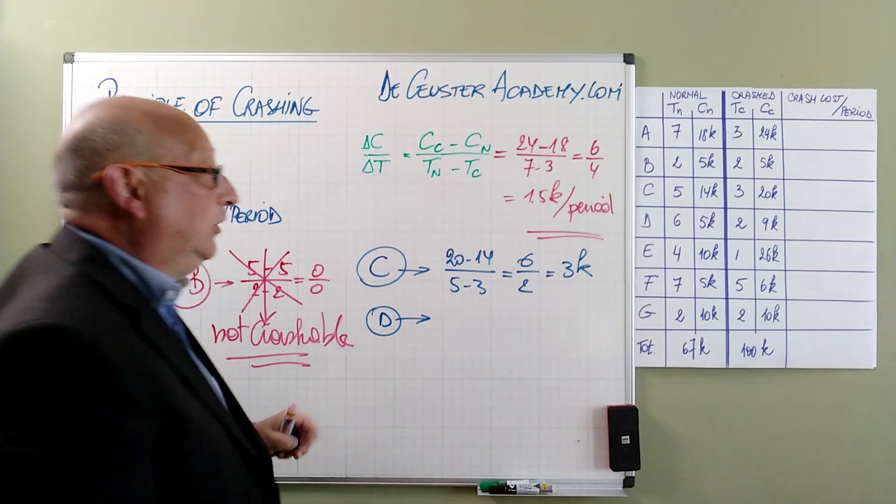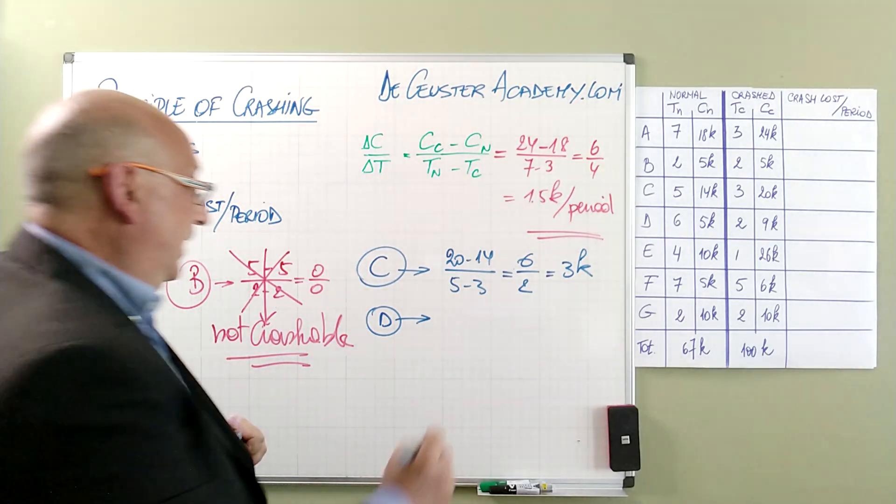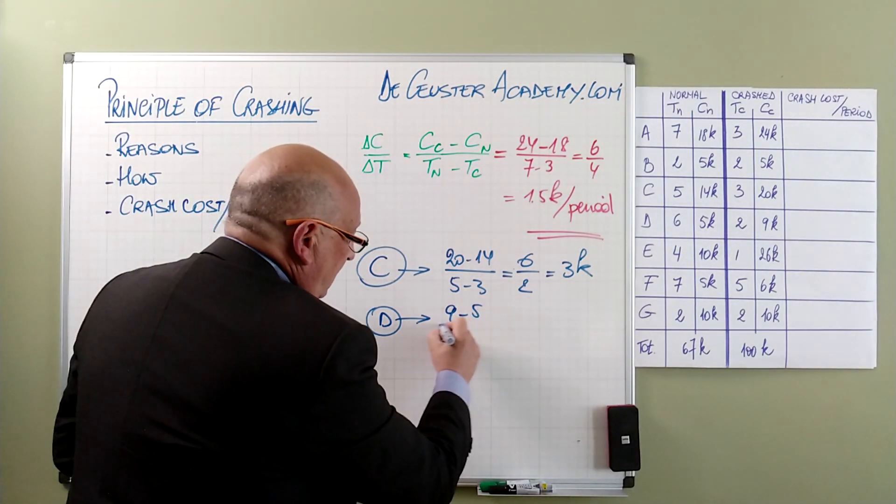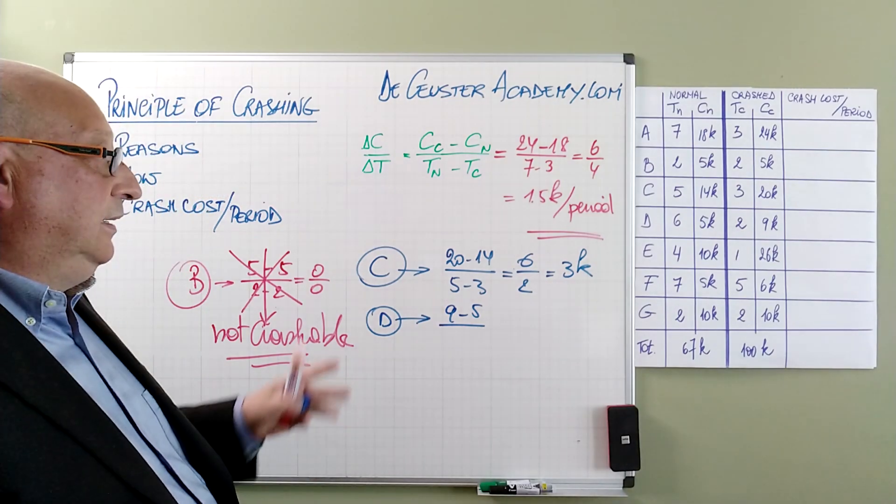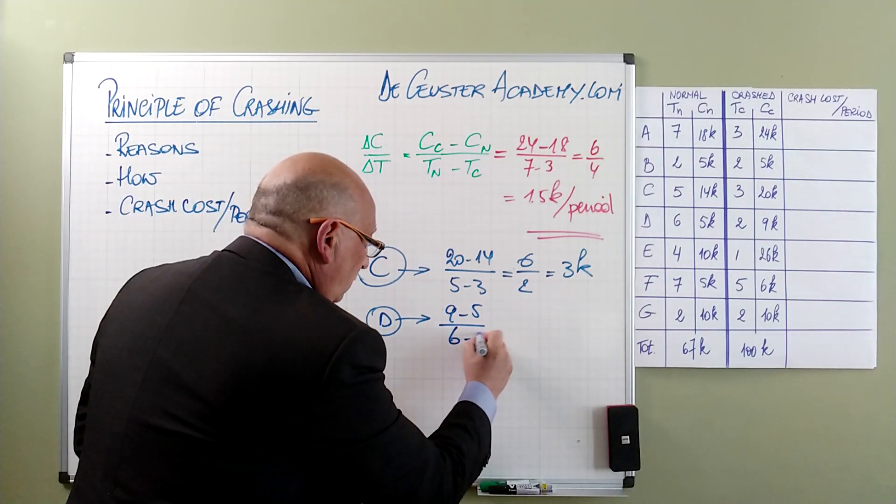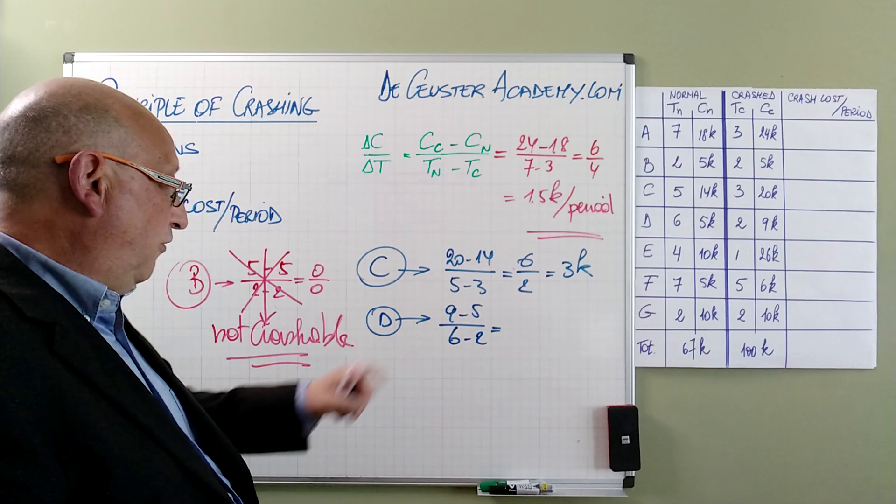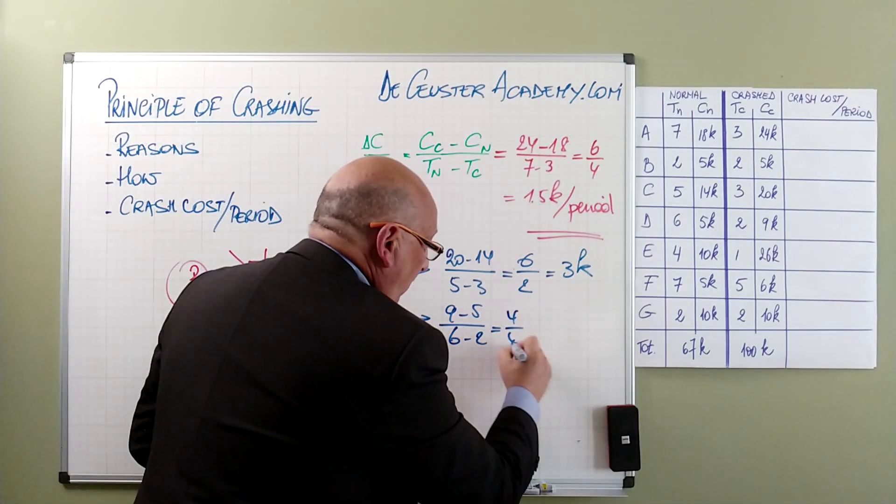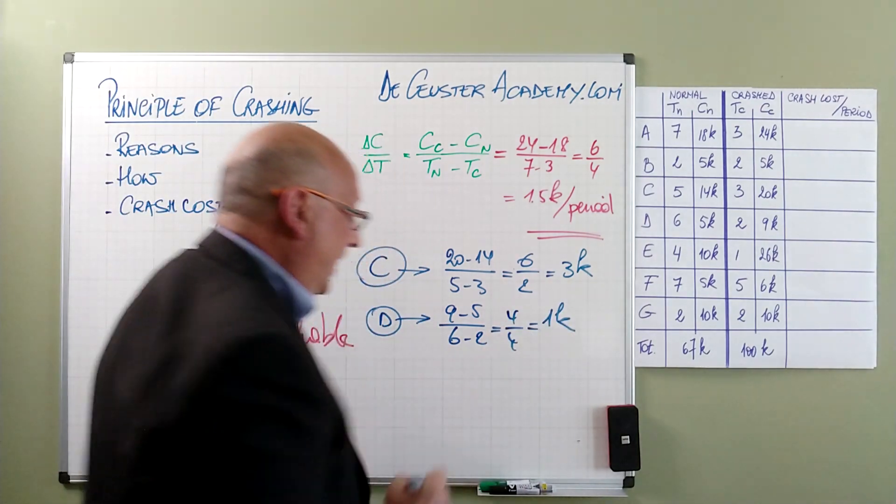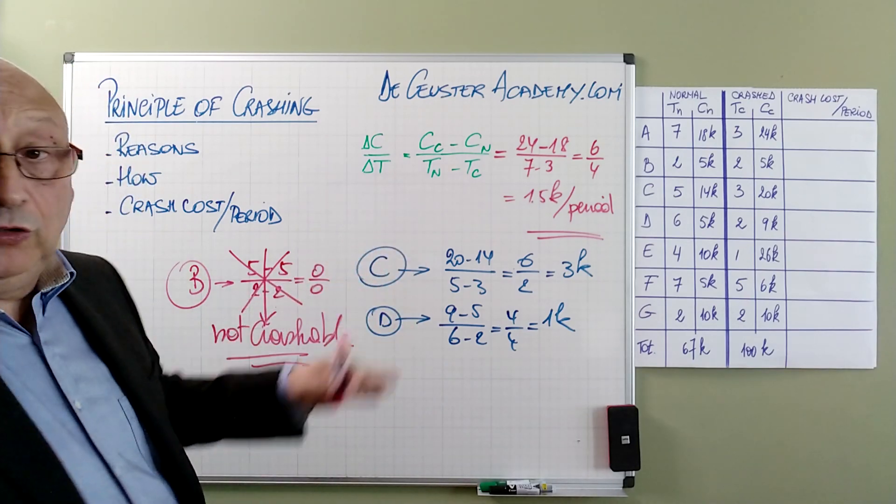We can continue that for D. For D, we find the value 9 minus 5 divided by 6 minus 2, which gives us 4 divided by 4, which is in fact 1K.